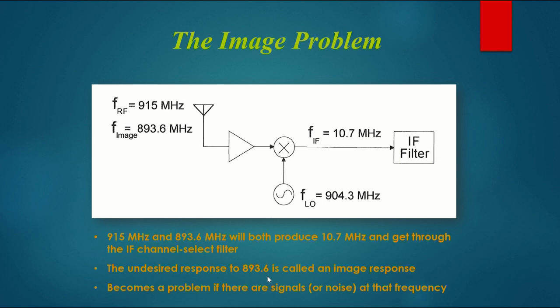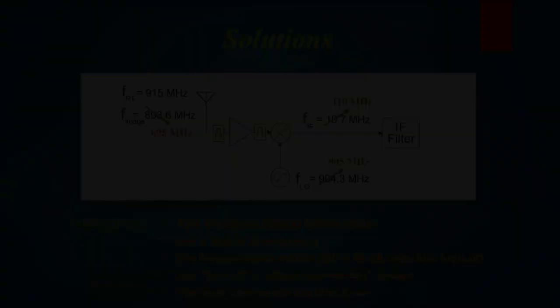The undesired response to this 893.6 MHz signal is called an image response. But here's the thing. You don't necessarily always have a problem because you don't necessarily always have a signal at the image frequency. So it becomes a problem only if there are signals or noise at that frequency.